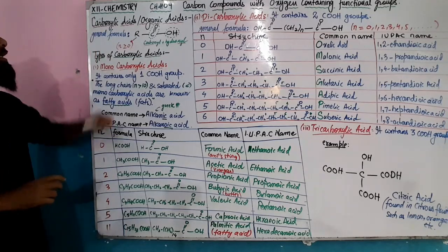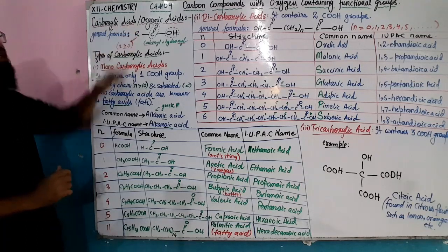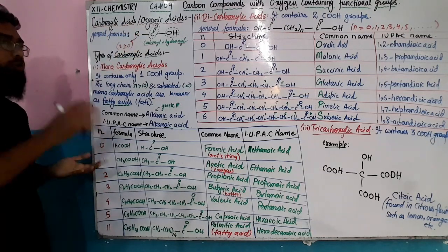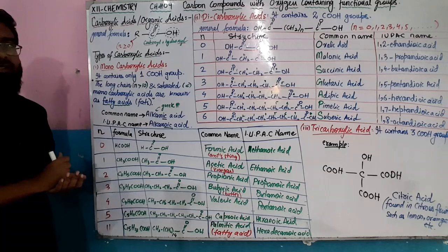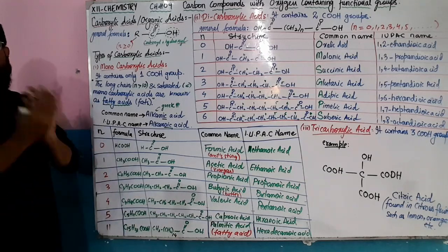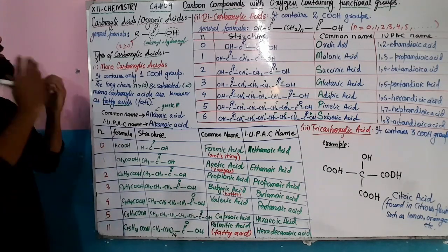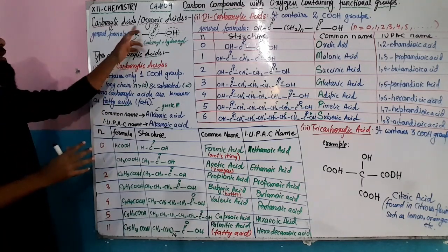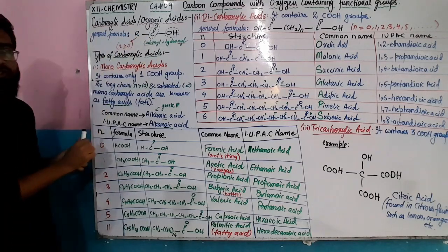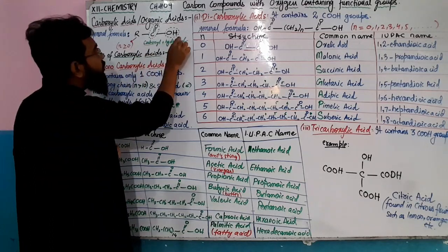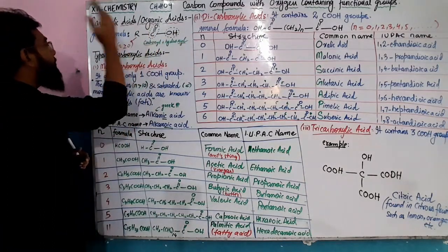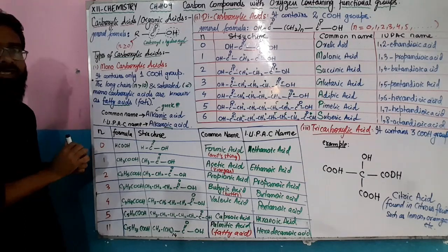Carboxylic acid is an organic acid. Organic compounds of acids are called carboxylic acids. You can also call them organic acids. All inorganic acids — such as sulfuric acid, nitric acid, hydrochloric acid, and carbonic acid — are inorganic. Carboxylic acid has acidic properties. The general formula is R-COOH, which contains the carboxyl group.